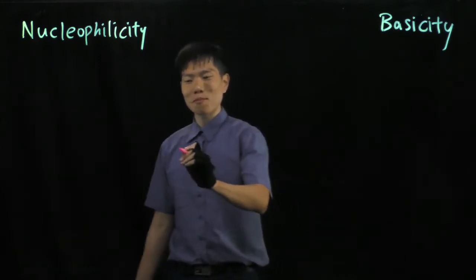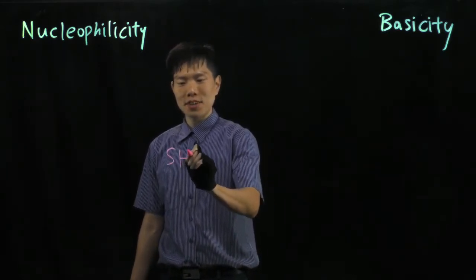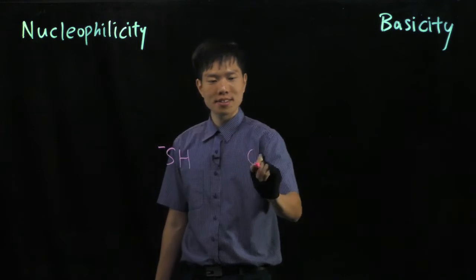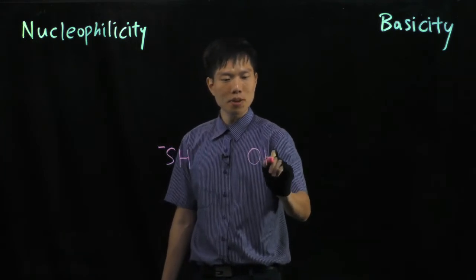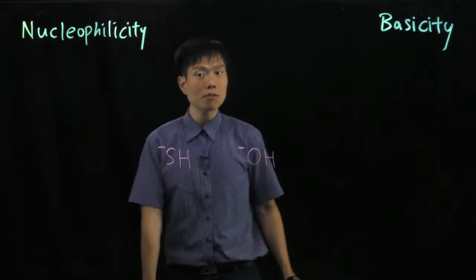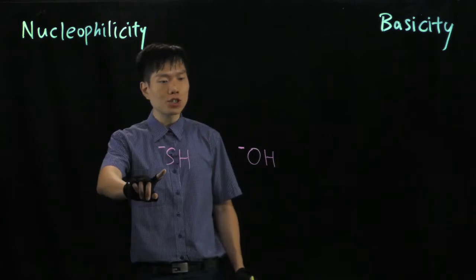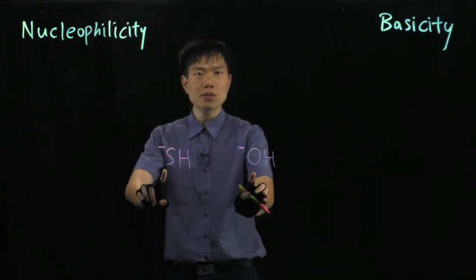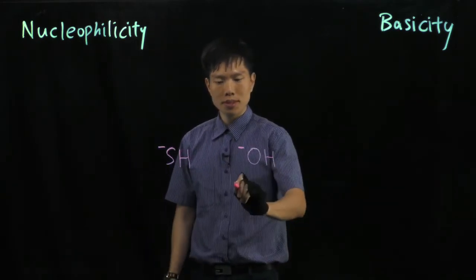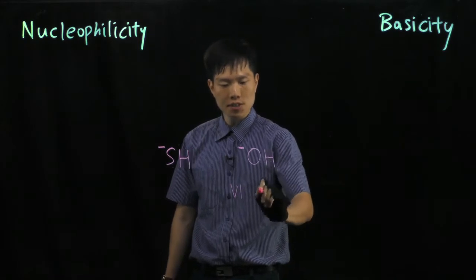Someone asked me: if I compare these two ions, which is more basic, which is more nucleophilic? Both sulphur and oxygen come from the same group of the periodic table — group number six, the chalcogen series.